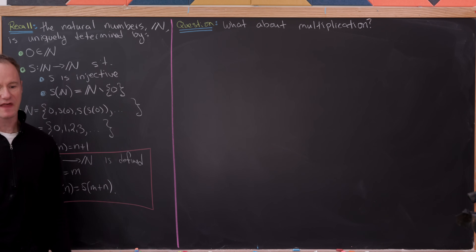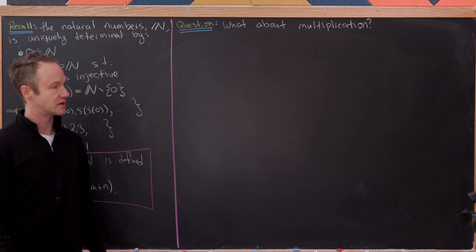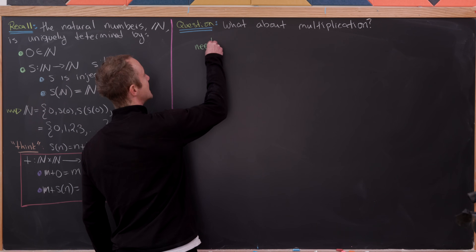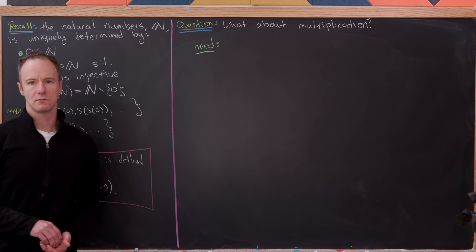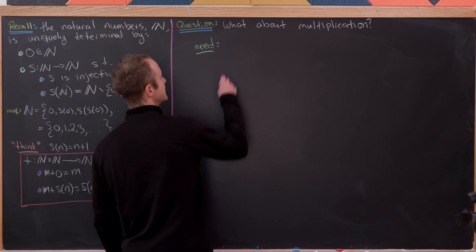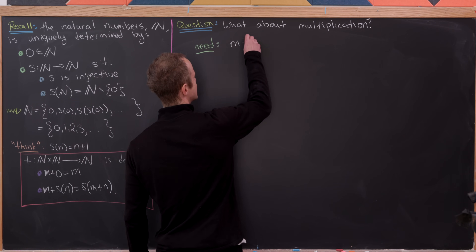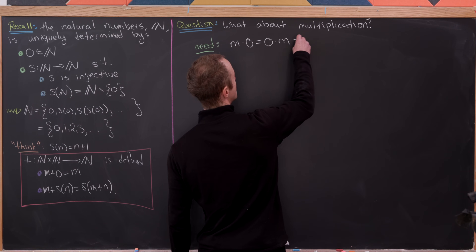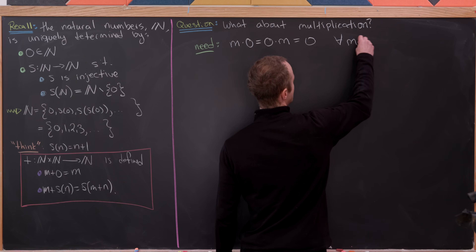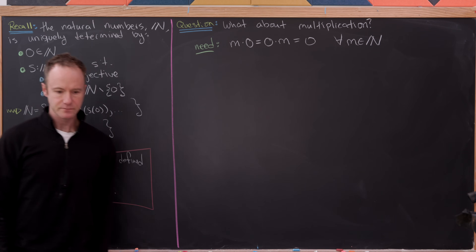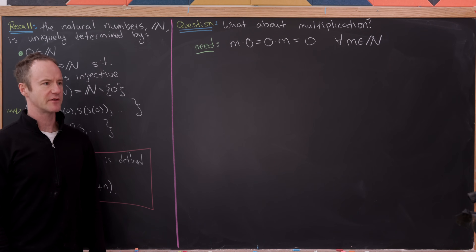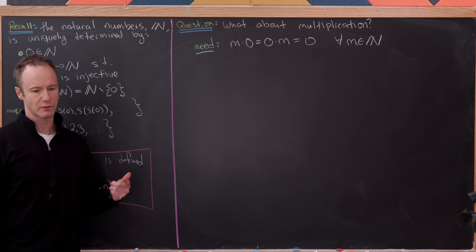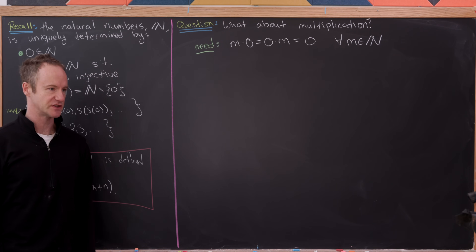Now we'd like to look at the following question: what about multiplication? In order to get off the ground, let's see some things that we would need to make sense for multiplication to be defined correctly. The first thing we would need is that m times zero equals zero times m, which equals zero, and this should hold for all natural numbers m. We'd also want commutativity of multiplication and associativity of multiplication — those will follow from the definition that we build.